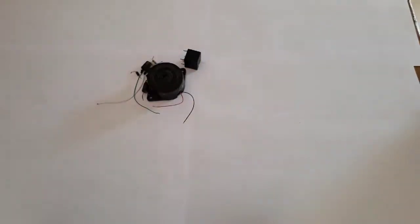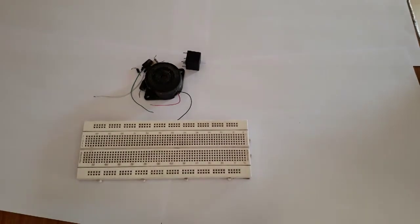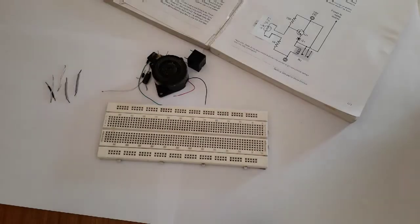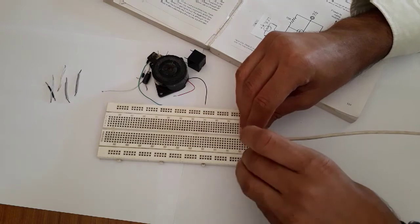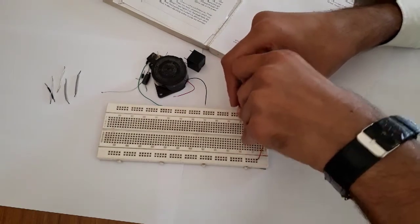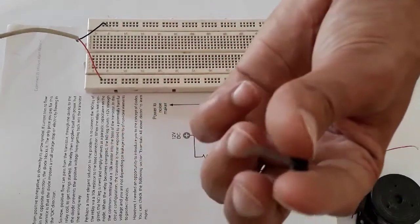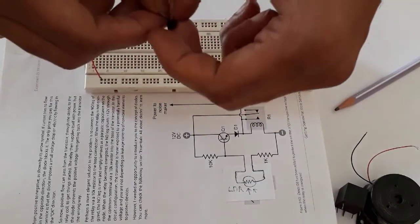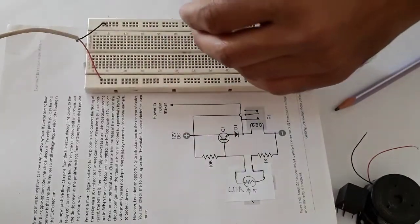Here are the components. We are going to arrange them in this breadboard with some jumper wires. First of all, we will put the source, that is 12 volt DC, and start arranging the components with this transistor, that is BC 547, according to this circuit diagram.